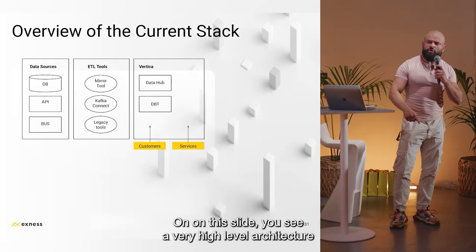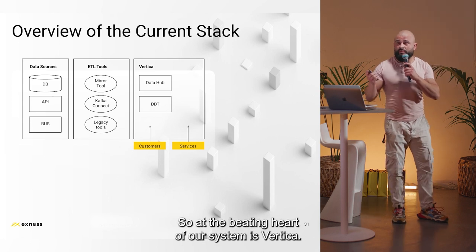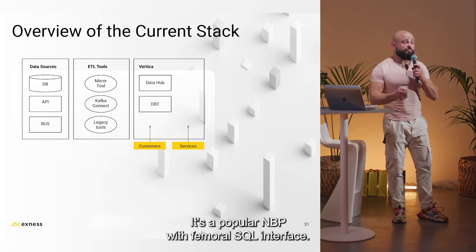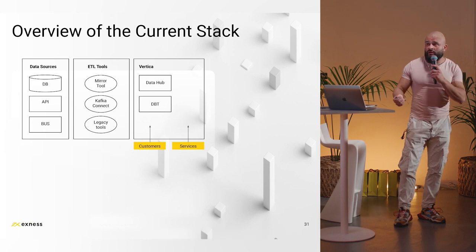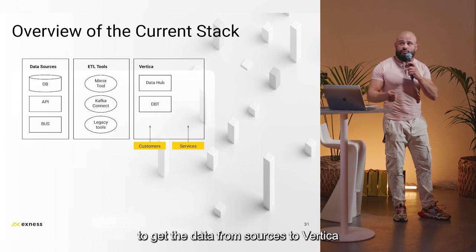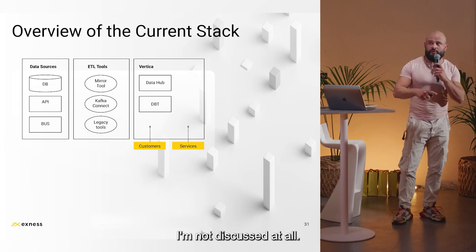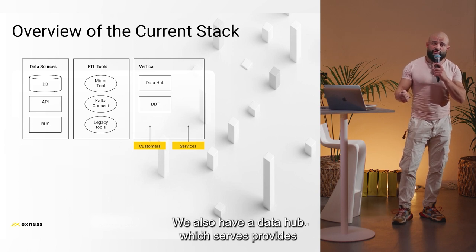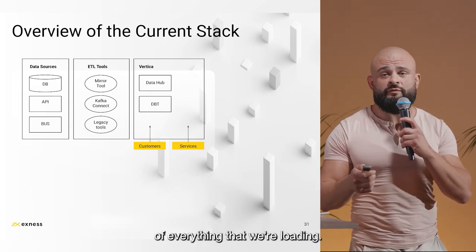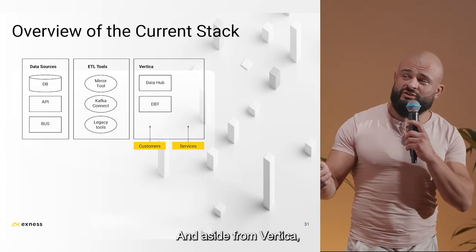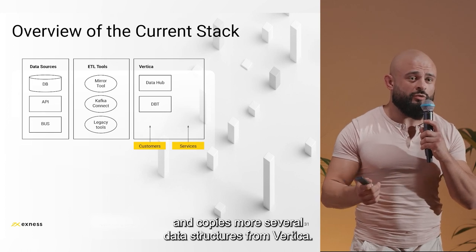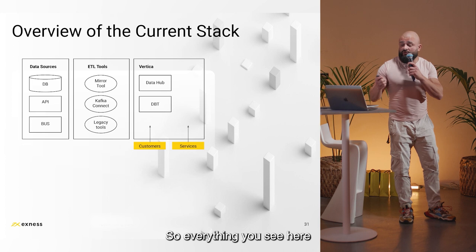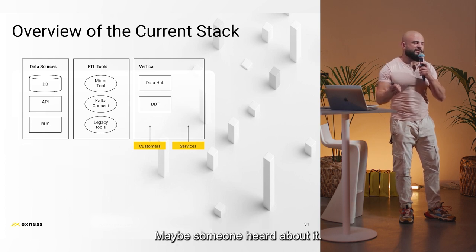On this slide you see a very high-level architecture of the existing platform. At the beating heart of our system is Vertica — it's a popular MPP with a familiar SQL interface, it's robust, it's performant, everybody knows it, it works great. We use mostly our custom ETL tools to get data from sources to Vertica, and some legacy tools as well. We also have a data hub which provides a glimpse into data lineage of everything we're loading. Aside from Vertica, we also have an instance of Postgres which mostly serves for operational analytics and copies several data structures from Vertica. Everything is being orchestrated by Argo Workflow — it's a Kubernetes orchestration tool.